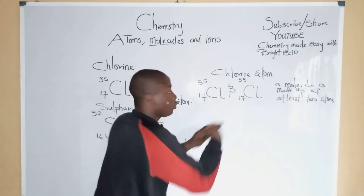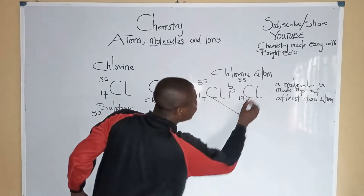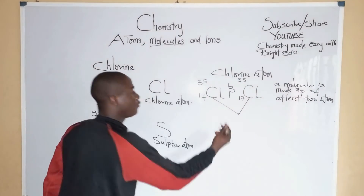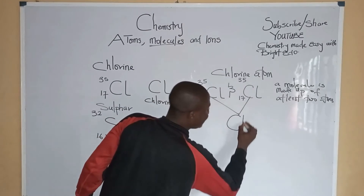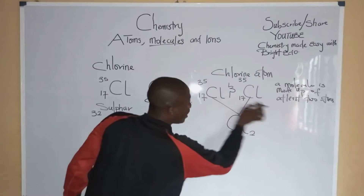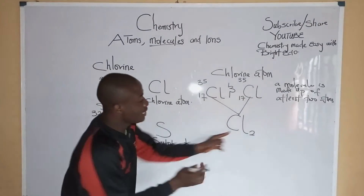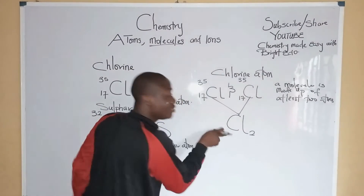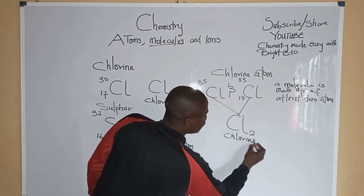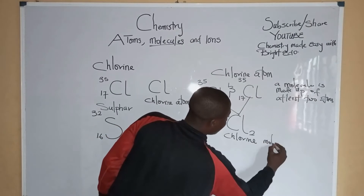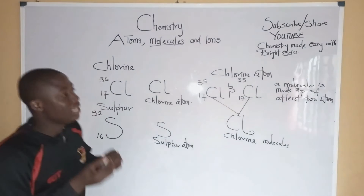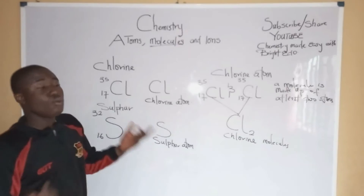So for example, this is a chlorine atom. When we have two atoms of chlorine and they are added together, they form a molecule of chlorine. So it will be Cl2, because we have two atoms of chlorine. So basically, this is pronounced chlorine molecule.